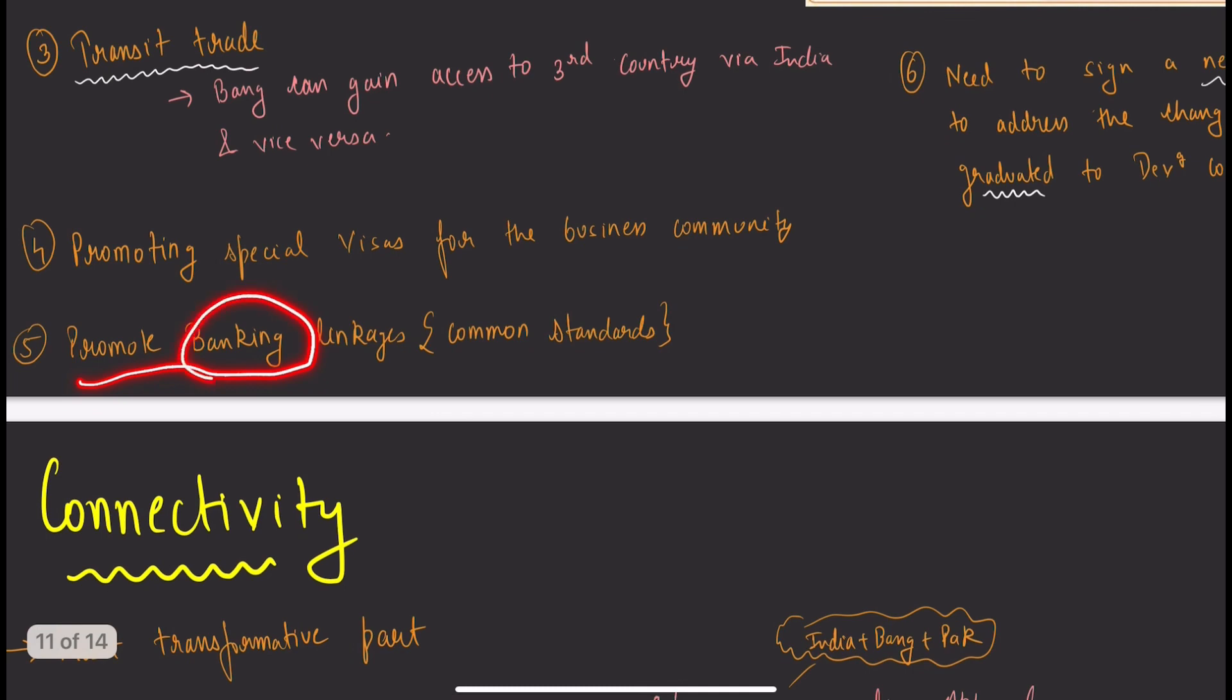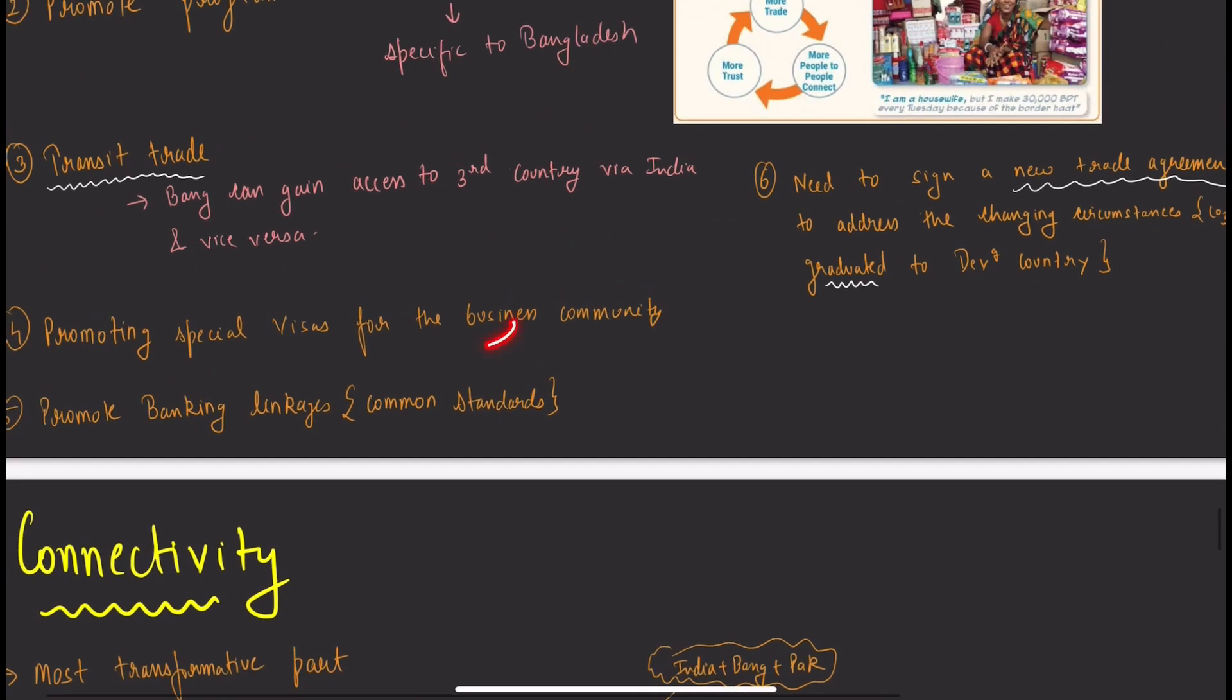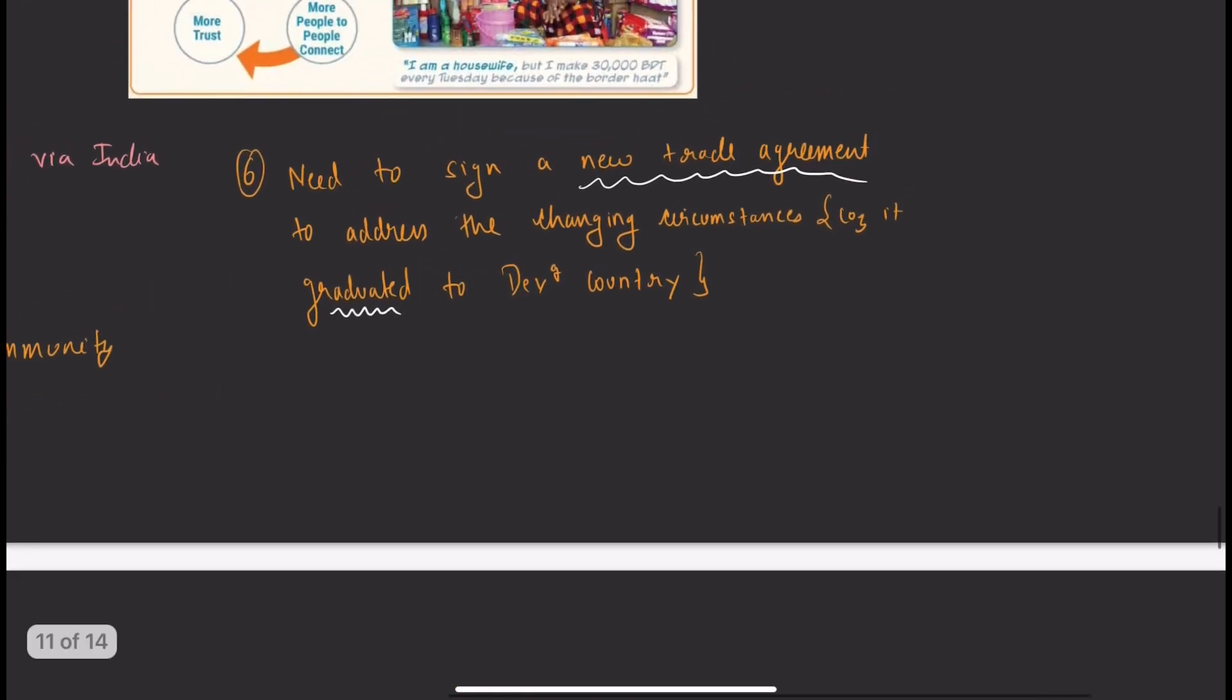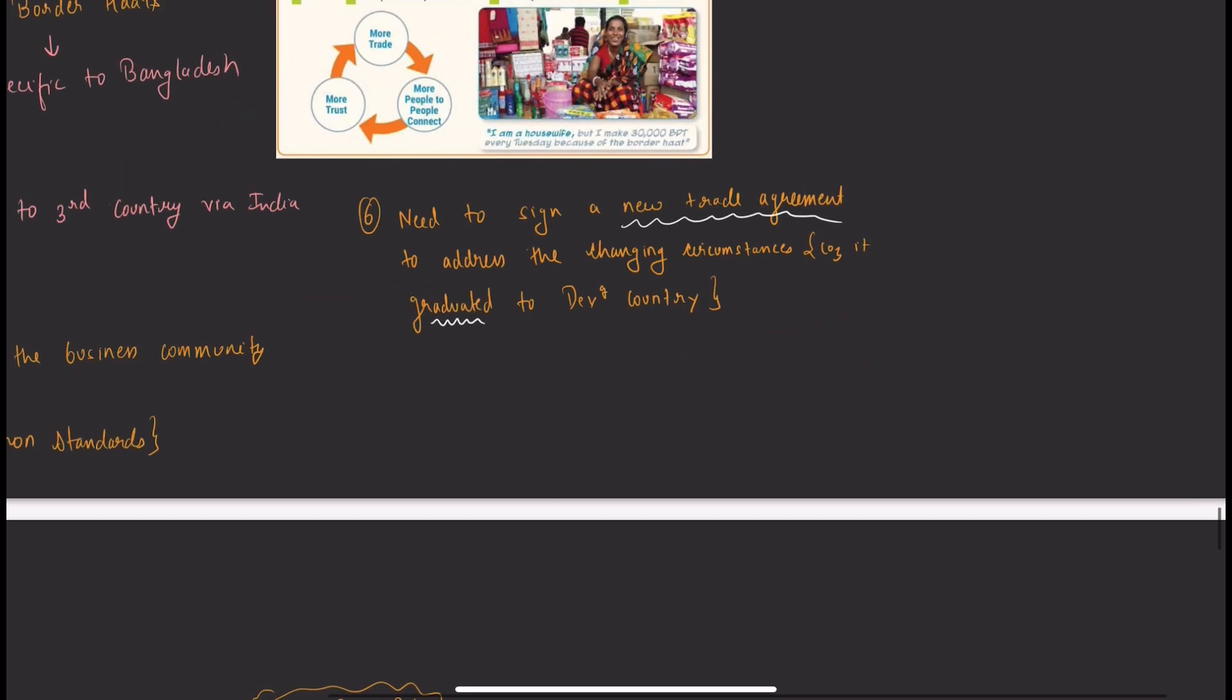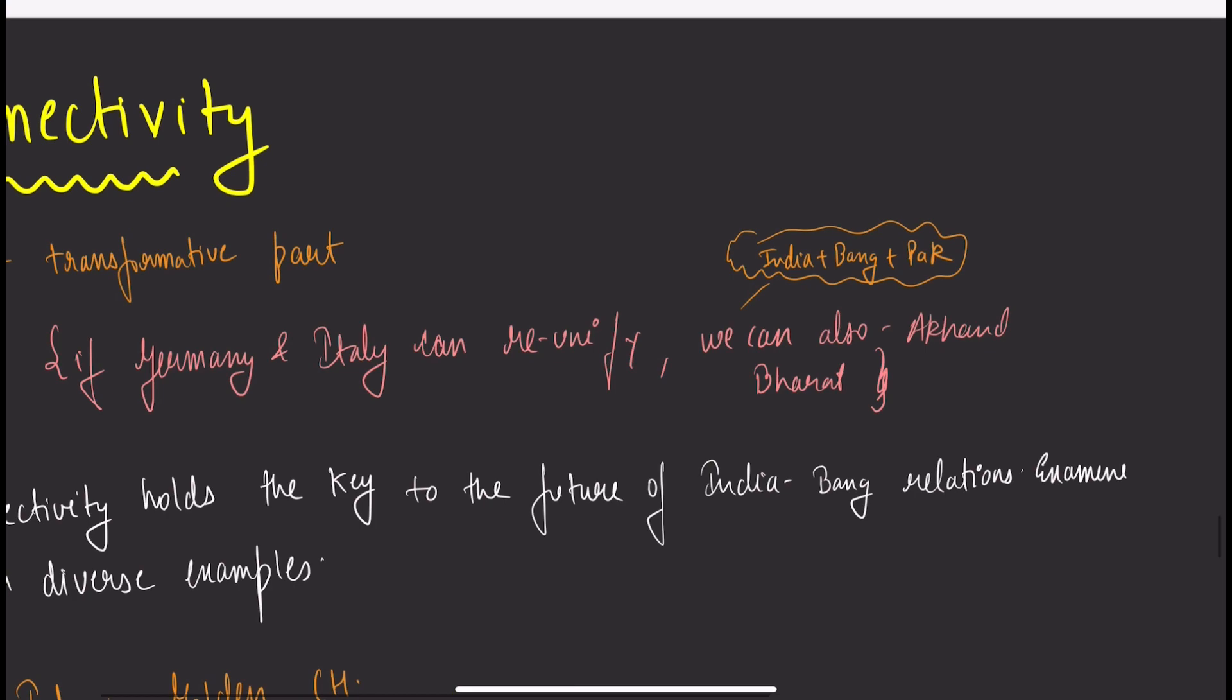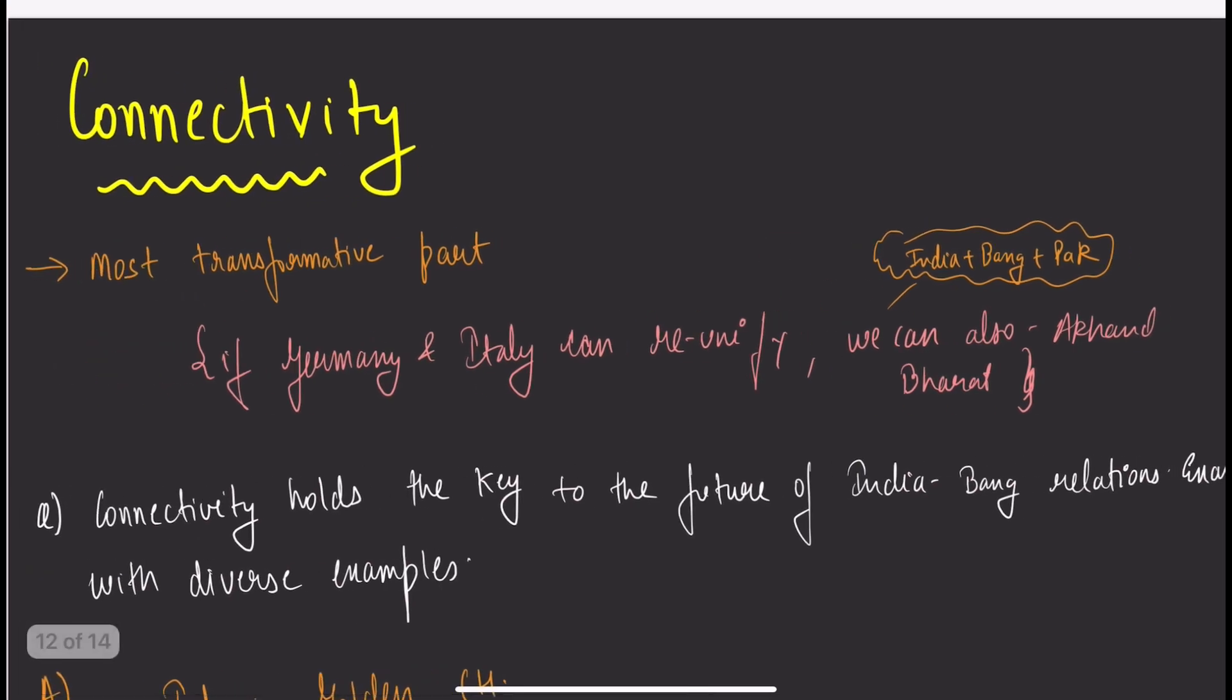Tier 2 diplomacy is when people meet at unofficial level rather than government. Business-to-business is one example. Increase banking linkages. Need to sign a new trade agreement to address changing circumstances because Bangladesh has graduated from least developing to developing country.